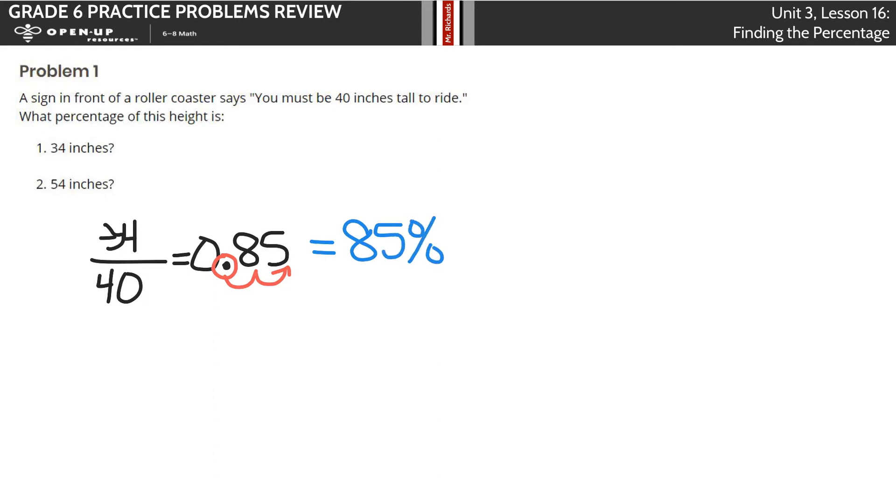So if you're 34 inches tall, you're 85% of the height you need to be. Now, what about the 54 inches? Same idea here. 54 is still going to go on top, and 40 is on the bottom. You should be expecting a percentage bigger than 100% because you're tall enough to ride. And sure enough, 54 divided by 40 is 1.35, and when we move our decimal place over two spots to the left, we get a solution of 135%.